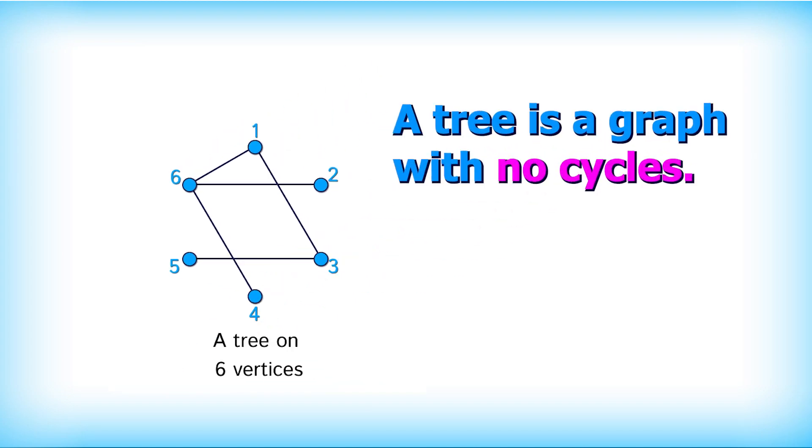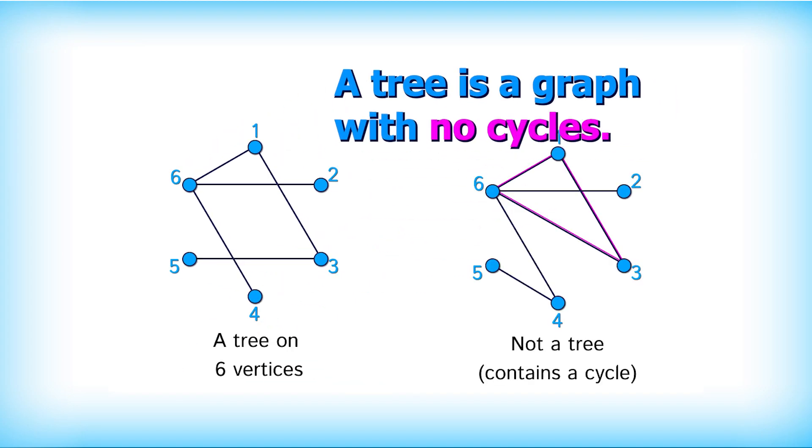In graph theory, a tree is just a graph with no cycles, so you never loop back on yourself.